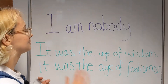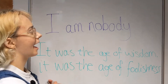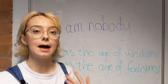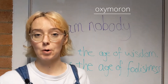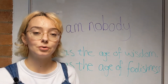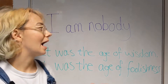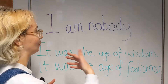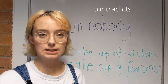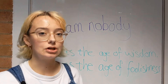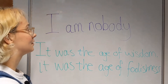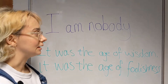First of all, we have this phrase: 'I am nobody,' which is an example of an oxymoron. An oxymoron is where you have two words or phrases that directly contradict each other. Here we have 'I am nobody.'